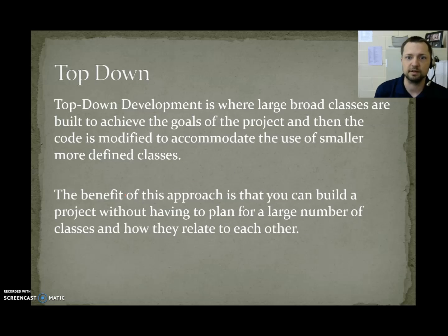Top-down. Top-down development is where large, broad classes are built to achieve the goals of a project and then code is modified to accommodate the use of smaller, more defined classes that are created later. The benefit to this approach is that you can build a project without having to plan for a large number of classes and how they relate to each other.